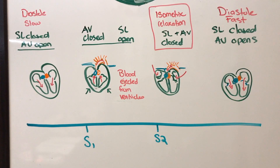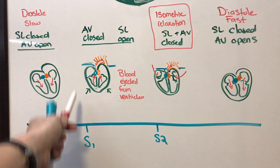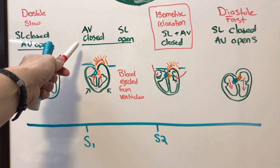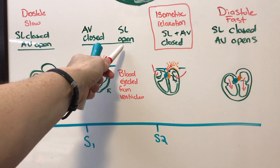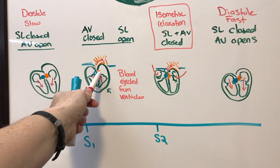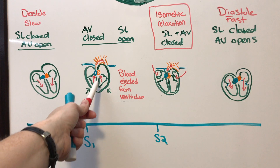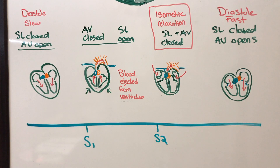We'll begin our discussion looking at the flow of blood as those valves are opening and closing, starting with S1. We have our AV valves closed — that's our mitral and tricuspid — and our semilunar valves open. You'll see that blood is going from the ventricles; there's contraction of the ventricles, and blood is being ejected through the semilunar valves out to the pulmonary system for oxygenation or to the body to deliver nutrients.